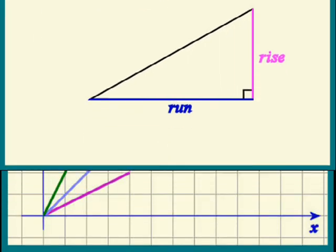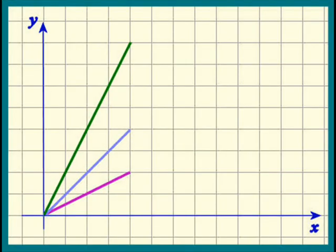Let's look at these three lines. We all know that the green line is the steepest of the three. Just knowing wasn't good enough, mathematicians needed a number to describe the steepness of the line. They called this number the slope of the line.